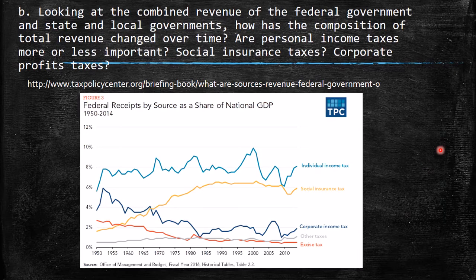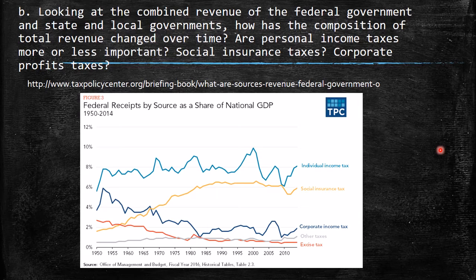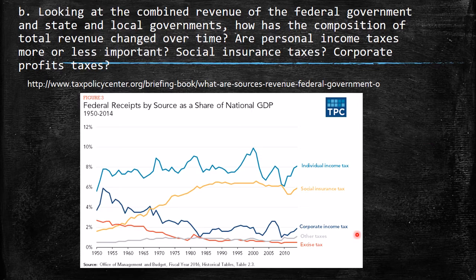The second part — question 2B — asks: looking at the combined revenue of the federal and state and local governments, how has the composition of total revenue changed over time? Are personal income taxes more or less important? Social insurance taxes? Corporate profit taxes? I found a very nice graph at the tax policy center showing total federal receipts by source as a share of national GDP.